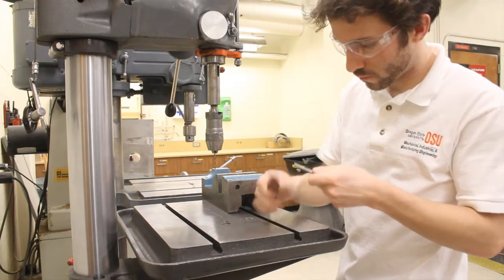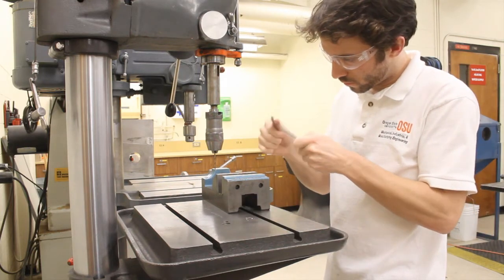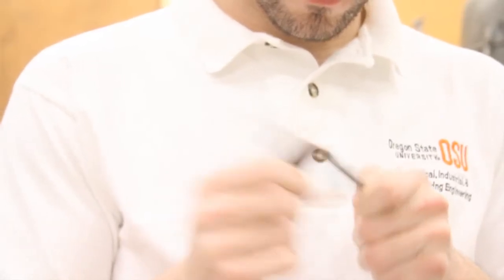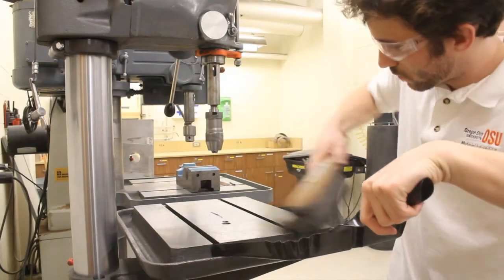Deburr the hole, again using sandpaper. Any burrs on the shaft will prevent the part from fitting into the arbor. Remember to clean any chips from the drill press when done.